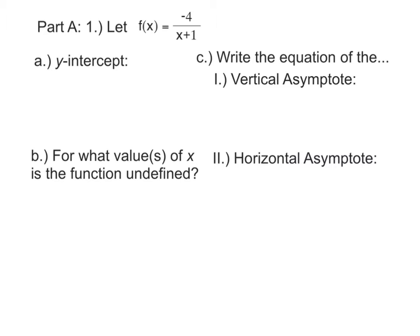If we're going to let f(x) be -4/(x+1), find the y-intercept. When we find the y-intercept, we let x equals 0. Find out what f(0) is - just plug 0 in. -4/(0+1), that's -4/1, and our y-intercept is -4.